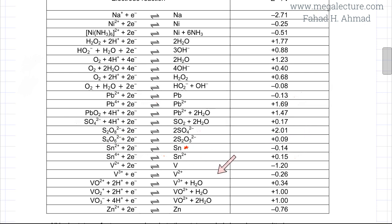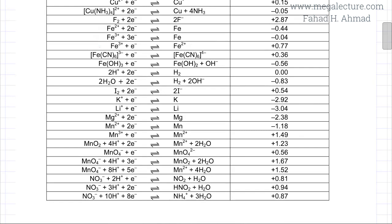There's one reaction where only tin is involved: it's an equilibrium between Sn and Sn²⁺, with an E° of −0.14 volts. There's no other reaction where only tin is involved — other reactions have Sn²⁺ or Sn⁴⁺ ions. Now searching for iodine, I₂: there's one reaction where I₂ gains electrons to form 2I⁻, with an electrode potential of +0.54 volts.